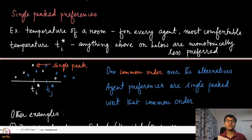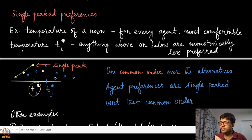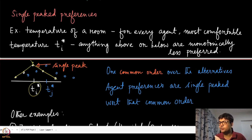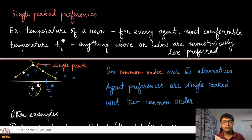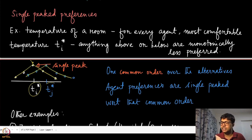Similarly, going hotter: from 25 to 26 you prefer it less, and even less at 27. So t_i* is the most preferred temperature for agent i, and preferences decrease monotonically in both directions. That brings us to this kind of preference called single-peaked: you have exactly one peak which you prefer most, and in both directions from that peak your preference goes down. Someone else might have a different most comfortable temperature, say 27 degrees, but with the same single-peaked structure.